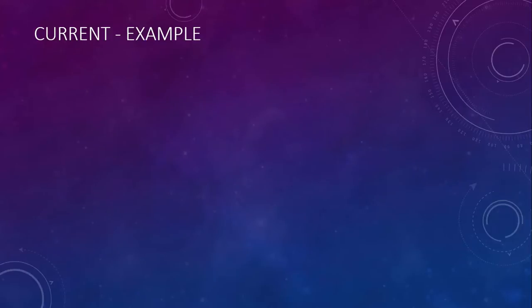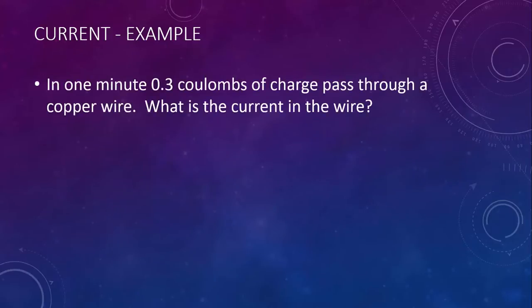Let's take a look at an example. In one minute, 0.3 coulombs of charge pass through a copper wire. What is the current in the wire? Well, we start with our equation. We know we have 0.3 coulombs, and we have 60 seconds, not one minute, 60 seconds. Here we can see that our current would be 0.005 amps, which would also be known as 5 milliamps.